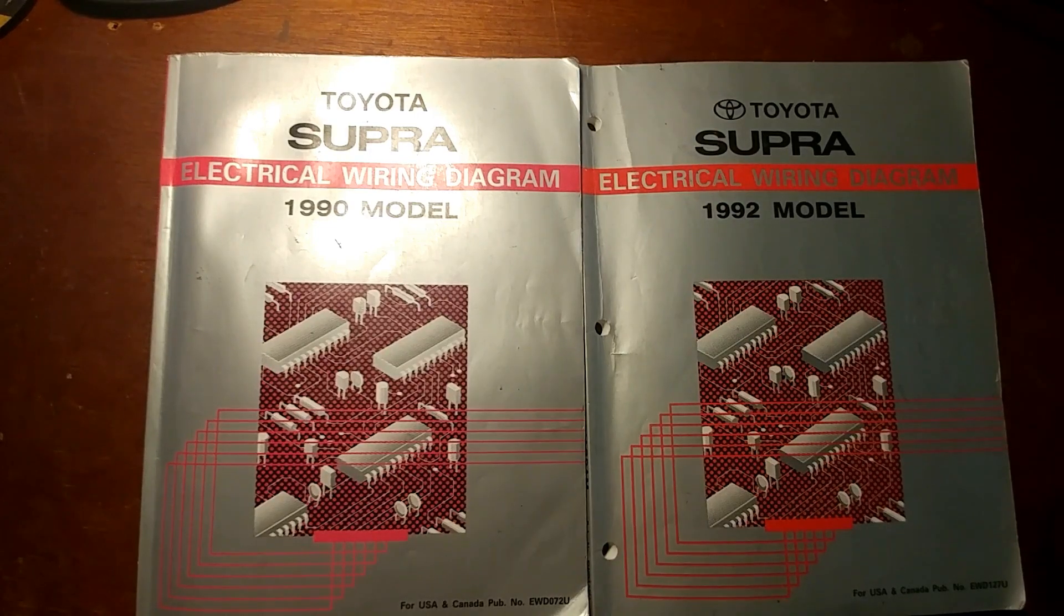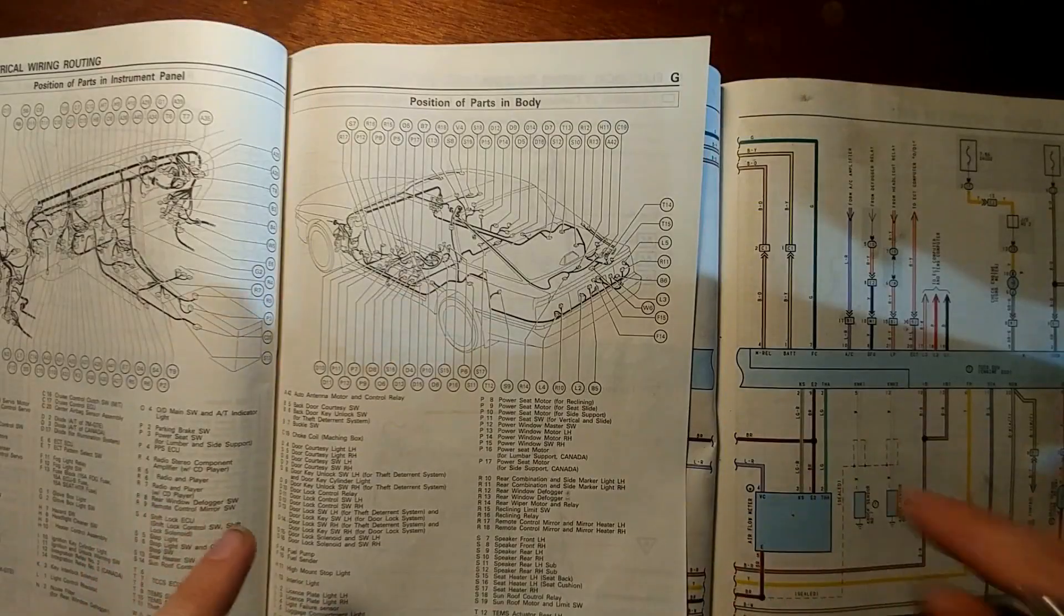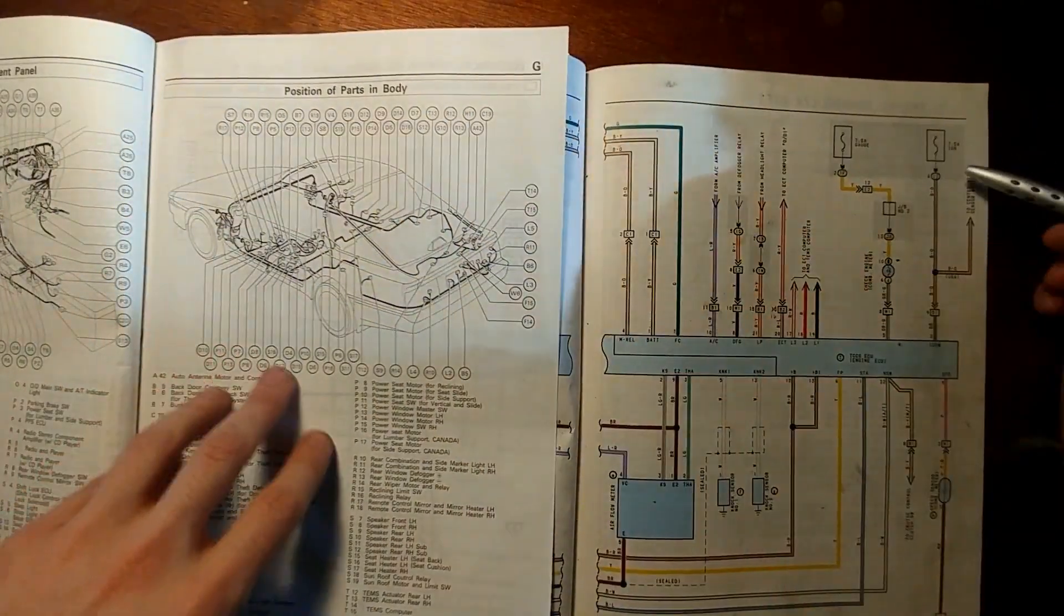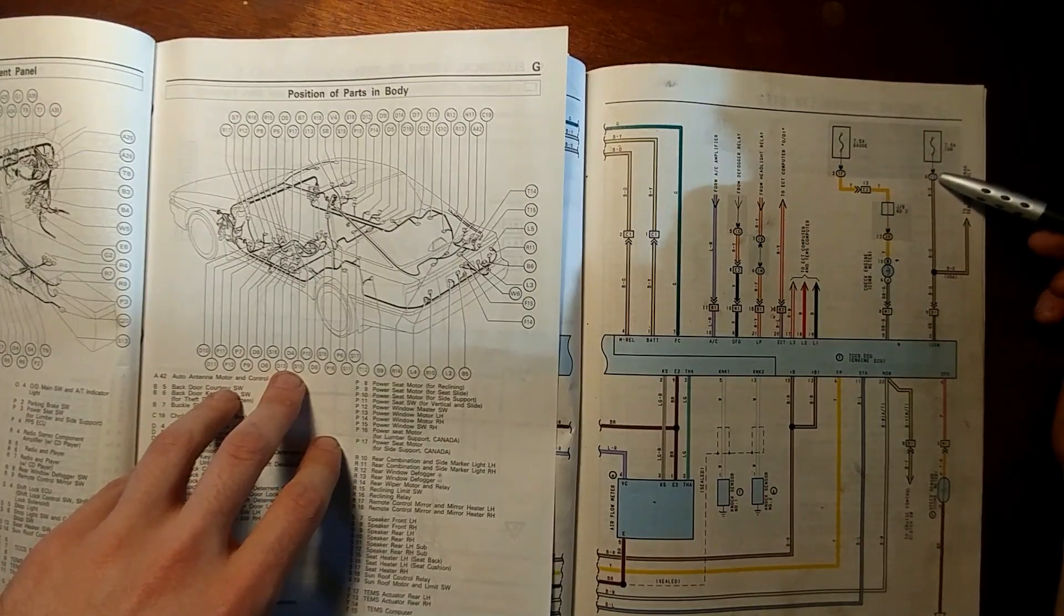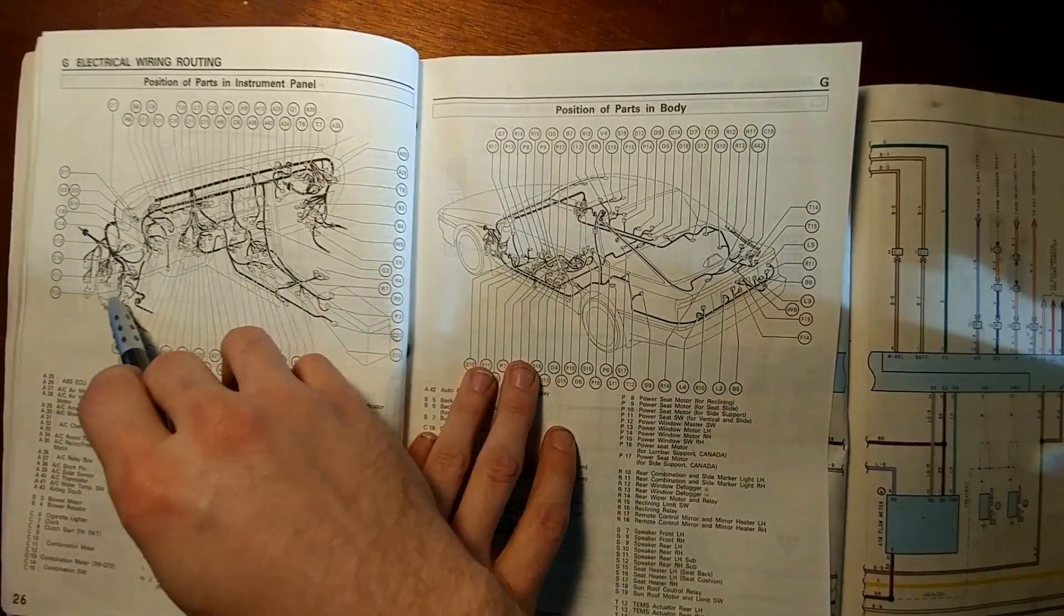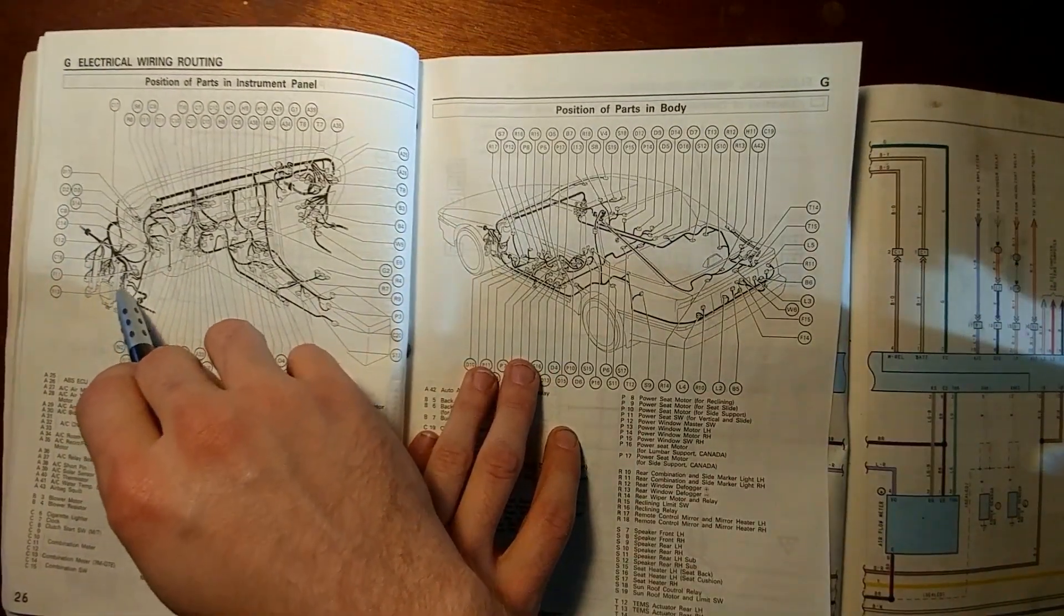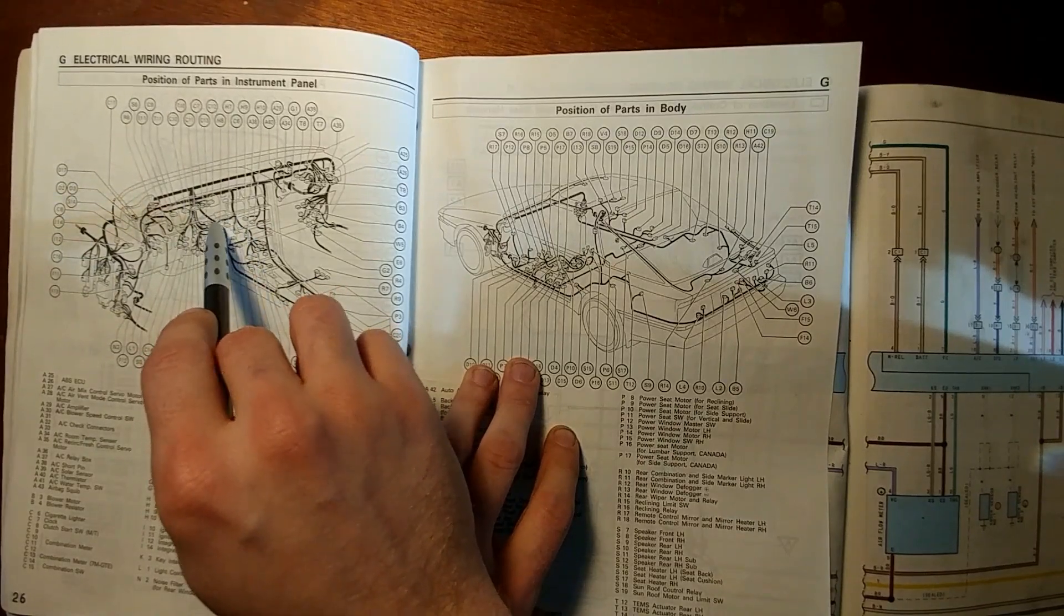Alright, so we're going to start by looking at the IGN circuit. The IGN circuit shown right here is a 7.5 amp fuse in the driver side kick panel. Power goes through your ignition switch when turned to the on or start position, through the fuse and then back over to the ECU.